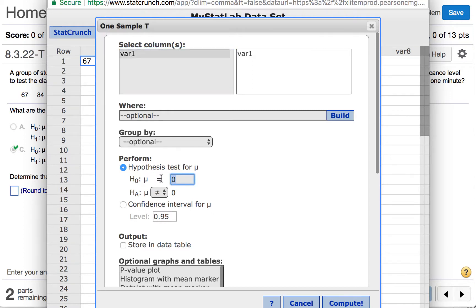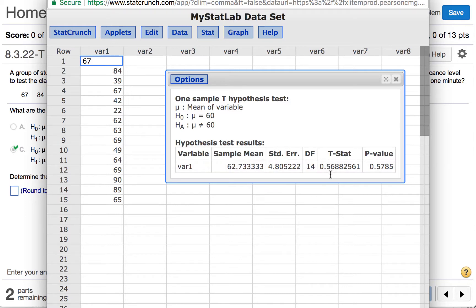Our null hypothesis is that the mean is equal to 60 and our alternative hypothesis is that it is not equal to 60. Click Compute. And we find a t statistic of 0.57 when we round to two decimal places.